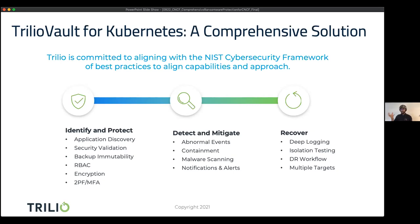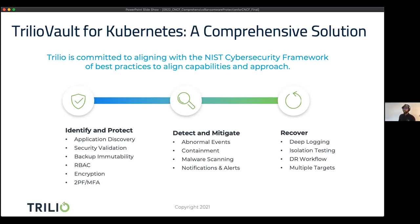Once you've gotten to that point-in-time capture, we already have isolation testing — you can take that capture into another environment, a test environment, run your security scanners on top of it to verify it's clean and hasn't been compromised. Then we have a disaster recovery workflow available today — you click a button, orchestrate the entire workflow, specify which seven apps were compromised, which point-in-time captures you want to restore, and restore in a specific order. The DR workflow lets you do all of that.